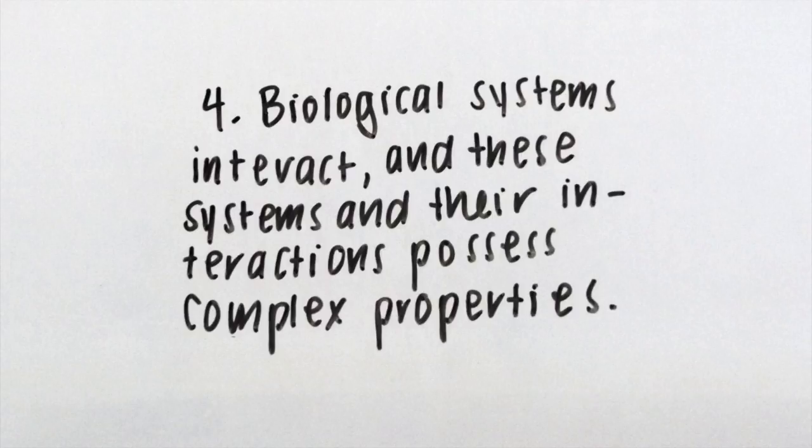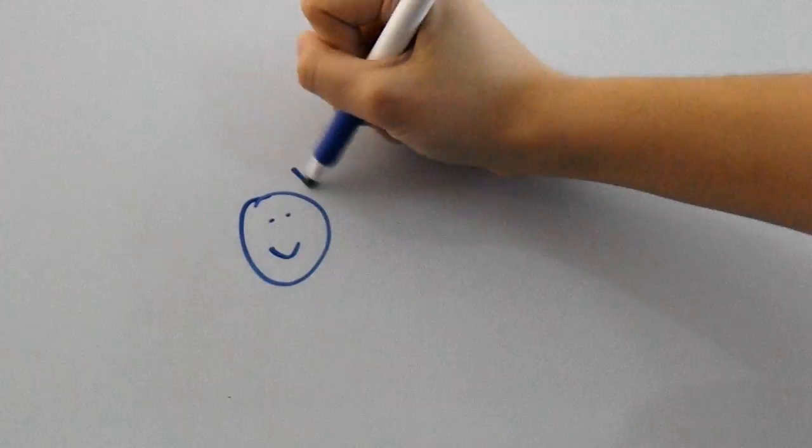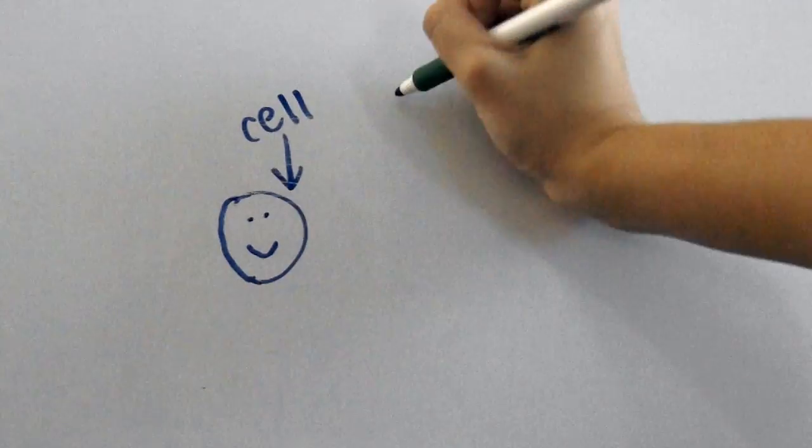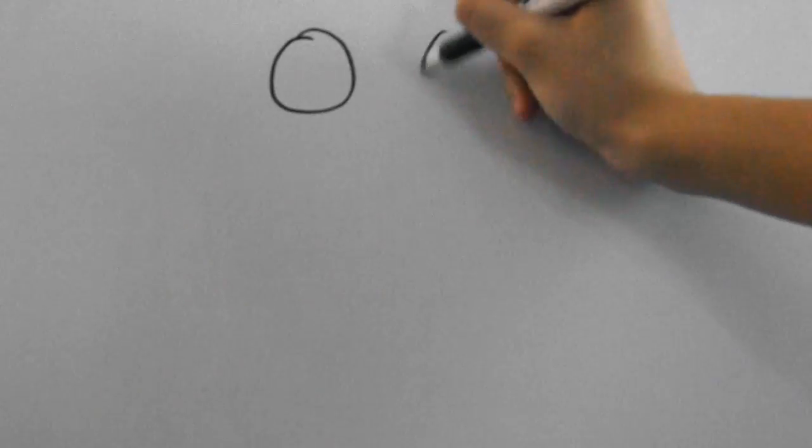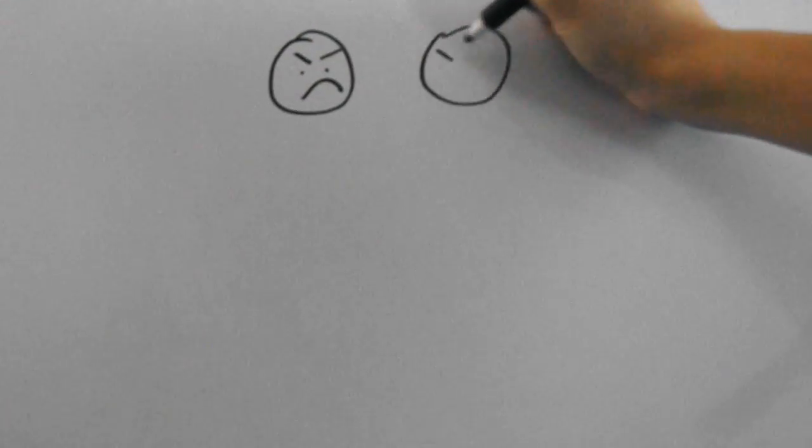Finally, biological systems interact and these systems and their interactions possess complex properties. We'll take a look at interactions between the cell and its environment, competition, and cooperation, just to name a few. This is where a lot of ecology comes into play since it describes organisms and their interactions with the environment around them.